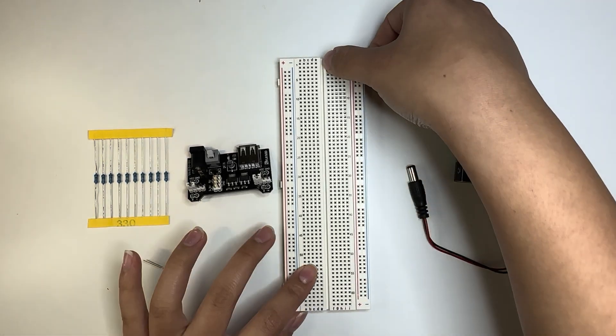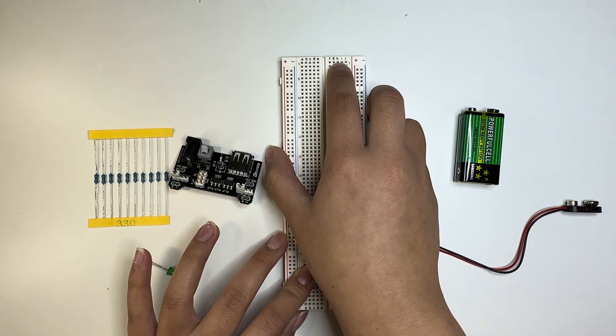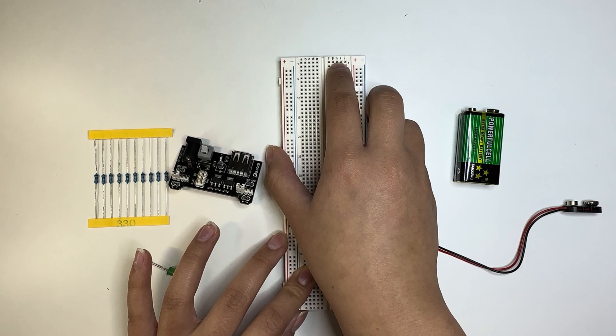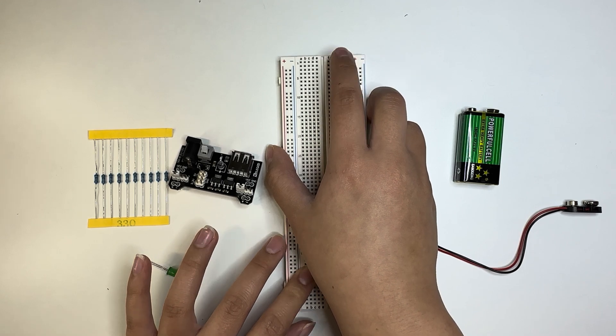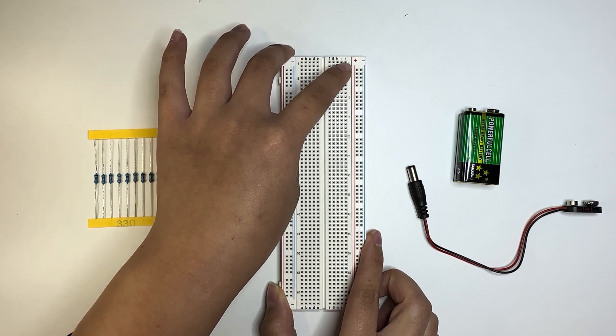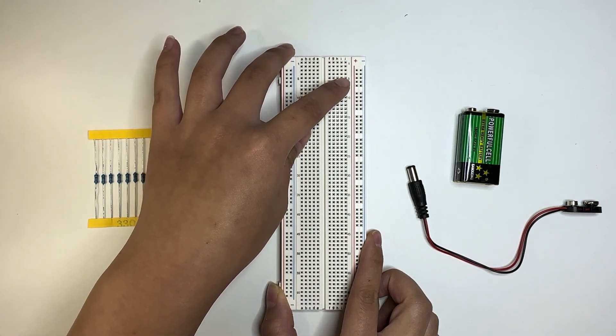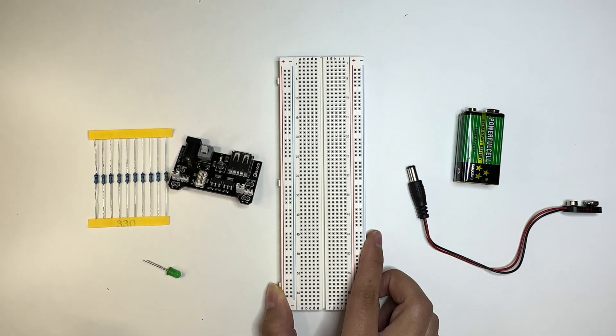But because of the trench here, A, B, C, D, E is not connected with F, G, H, I, J. Okay, F, G, H, I, J, though, is interconnected horizontally within each other. So the first row, all of these are interconnected. Fifth row, all of these horizontally interconnected. Okay, you get the idea.